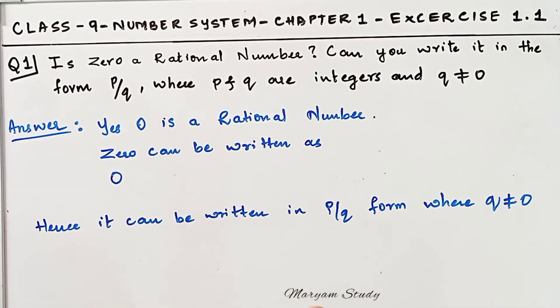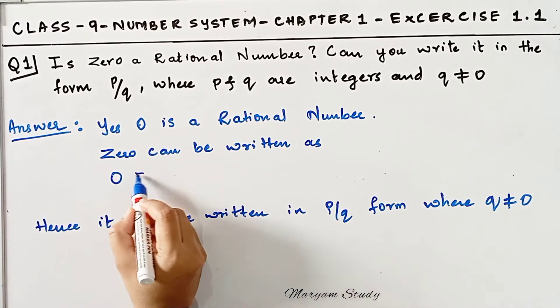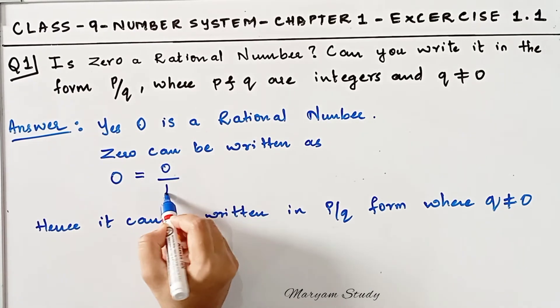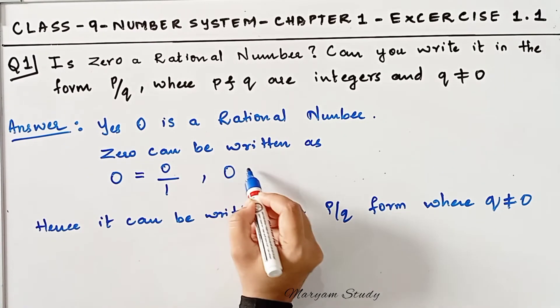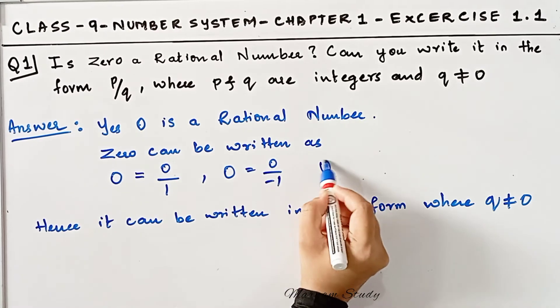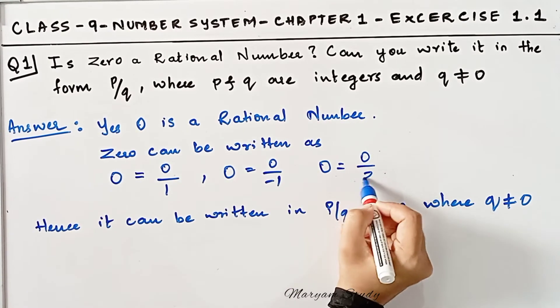If you haven't seen that video, then we can check it first. 0 can be written as 0 by 1, or 0 can be written as 0 by minus 1, or 0 can be written as 0 by 2, etc.